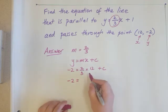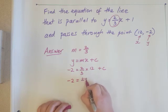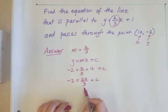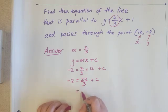2 thirds times 12. That's 2 times 12, which is 24 divided by 3. Let's work out 24 divided by 3. That's 8.